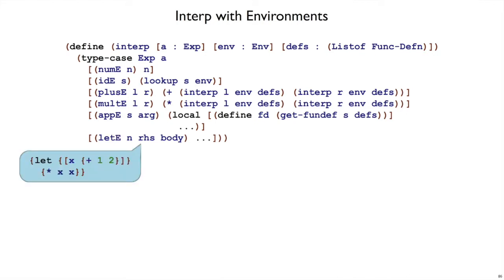Let's suppose, as an example, that we have the expression that we're interpreting, let x be plus 1, 2, and times x x. So clearly, we want to get a 9 out here. And the way we want to do that is by interpreting this first expression, plus 1, 2.